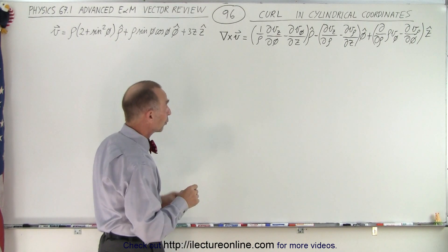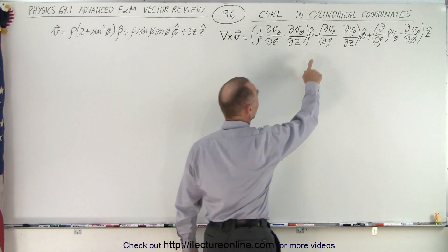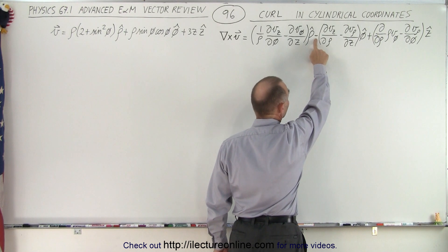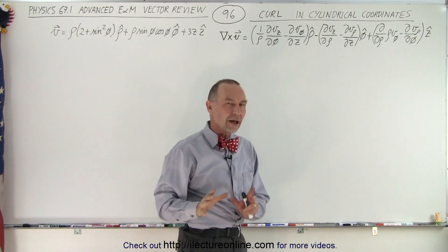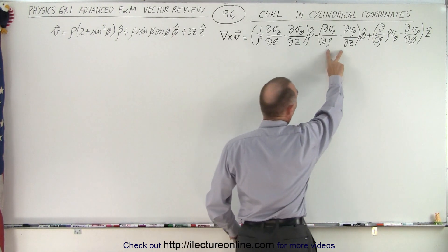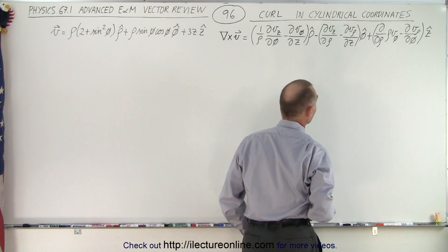Now when we look at the equation for the curl, notice that the second term or the middle term has a negative in here. Most books will put a positive sign there, but then they will reverse the order of these two to negate the negative here.